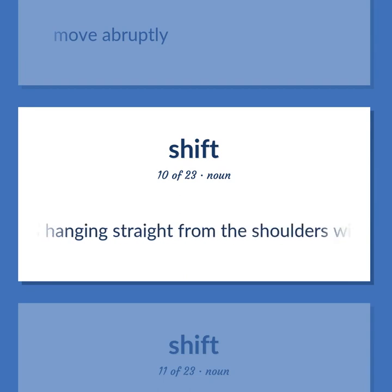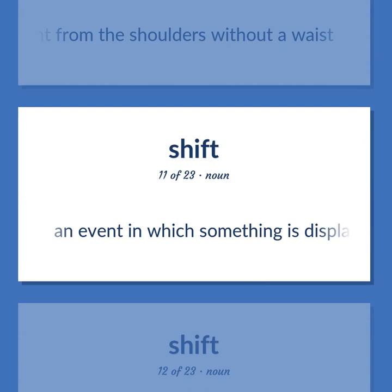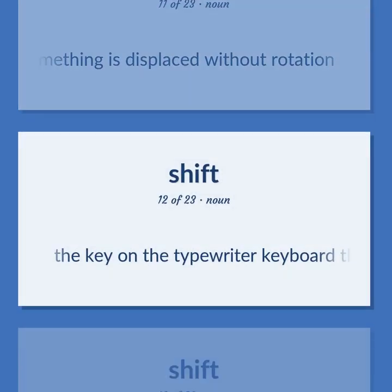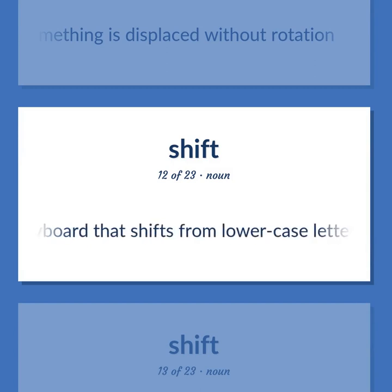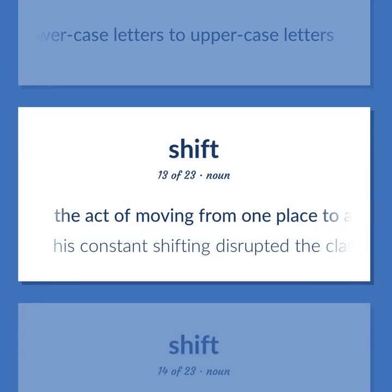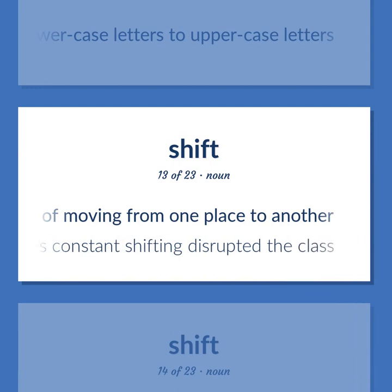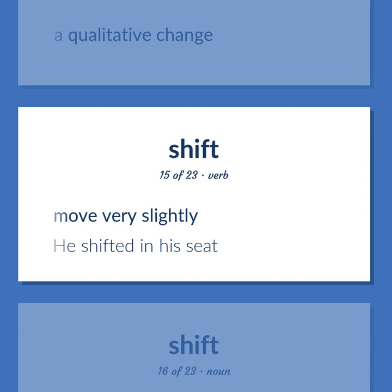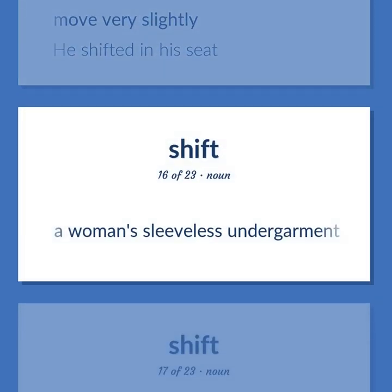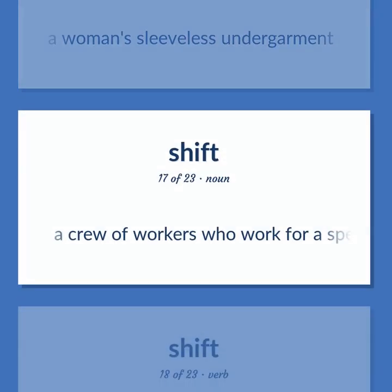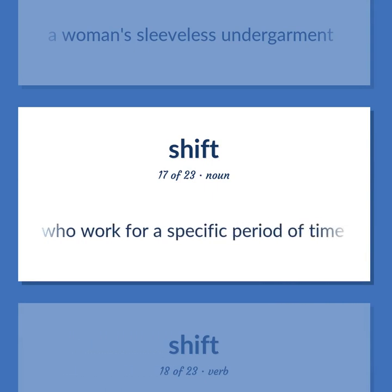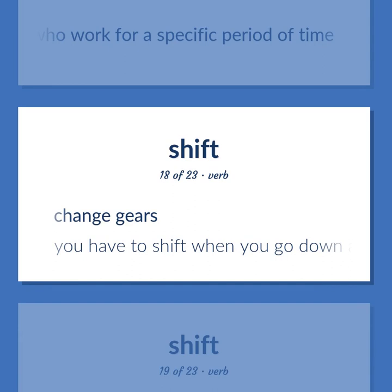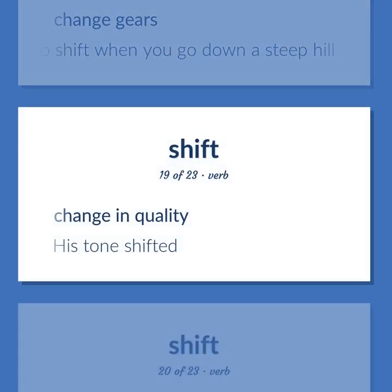A loose-fitting dress hanging straight from the shoulders without a waist. An event in which something is displaced without rotation. The key on the typewriter keyboard that shifts from lowercase letters to uppercase letters. The act of moving from one place to another — his constant shifting disrupted the class. A qualitative change. Move very slightly. He shifted in his seat. A woman's sleeveless undergarment. A crew of workers who work for a specific period of time. Change gears. You have to shift when you go down a steep hill. Change in quality — his tone shifted.